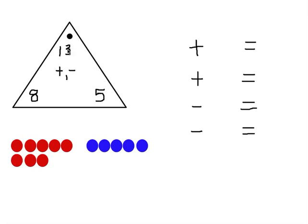You can see that 13 is the large number. The large number will always be on top and it's usually designated by a dot. And 8 and 5 are my two small numbers.